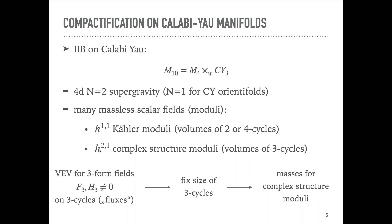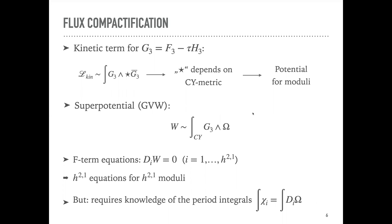The complex structure moduli, whose number is given by h^{2,1}, correspond to the volumes of the three-cycles. For phenomenological reasons these massless scalar fields are unwanted — we don't see them in our world — so we need a mechanism to generate masses for them. In Type IIB string theory the nice situation is that I have three-form fields, and I can give a vacuum expectation value to these three-form fields on the topological three-cycles of the manifold. These fluxes fix the sizes of the three-cycles and provide masses for the complex structure moduli.